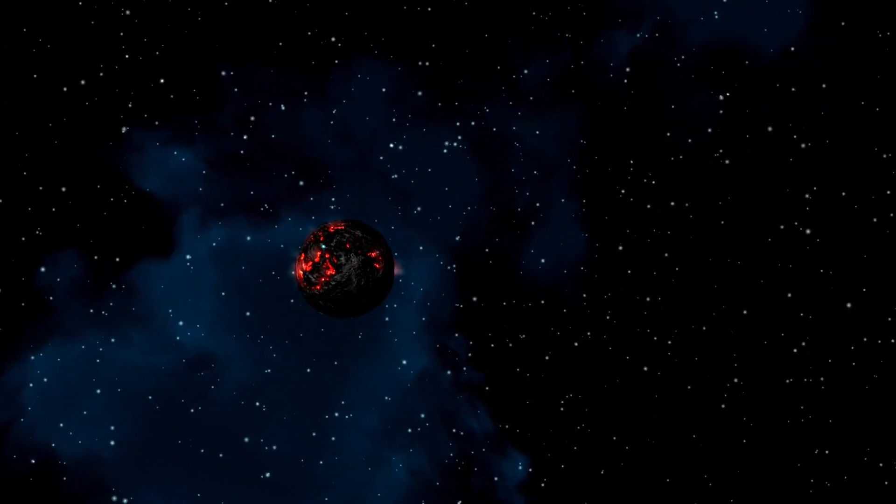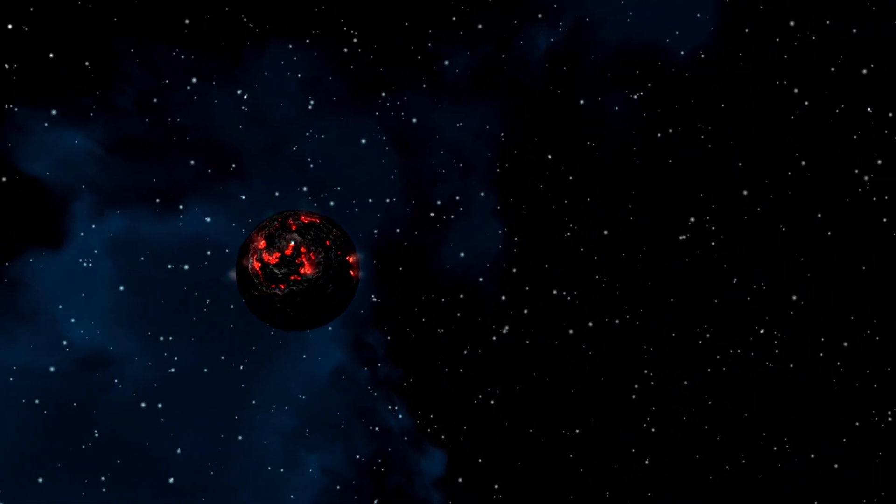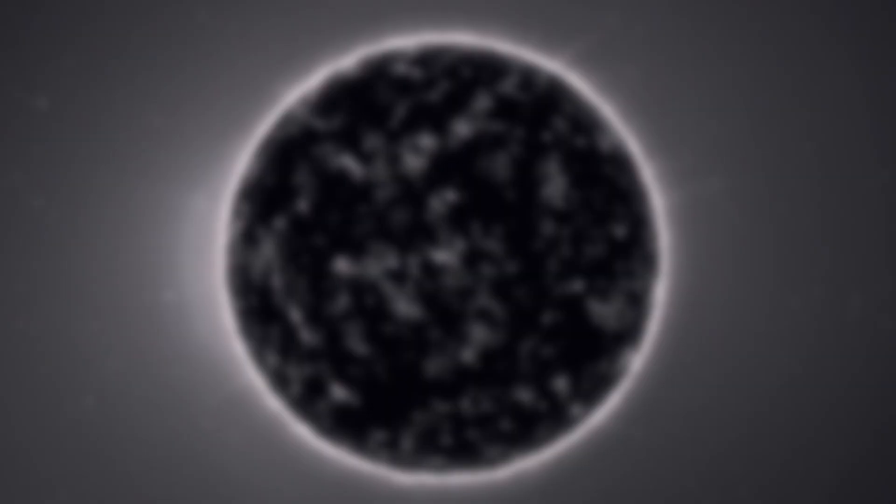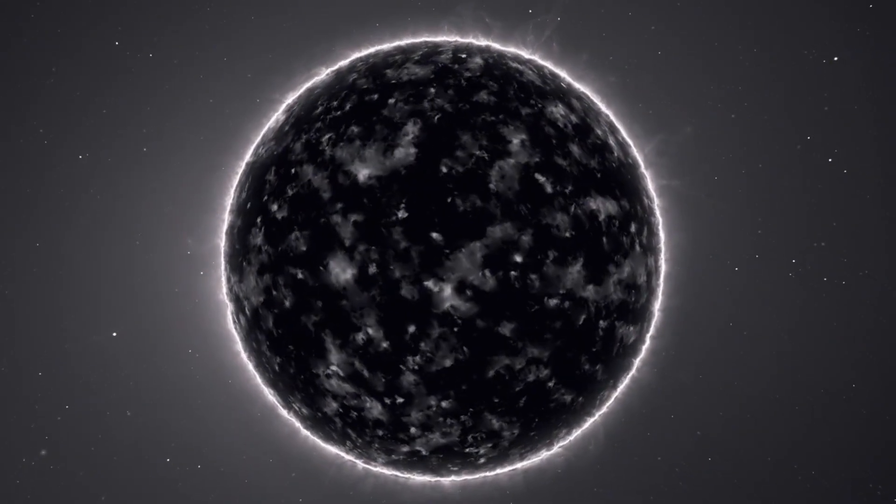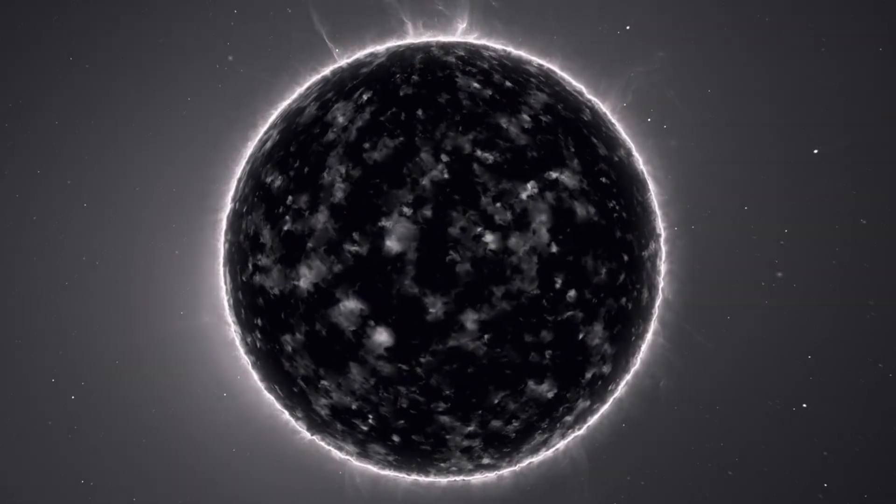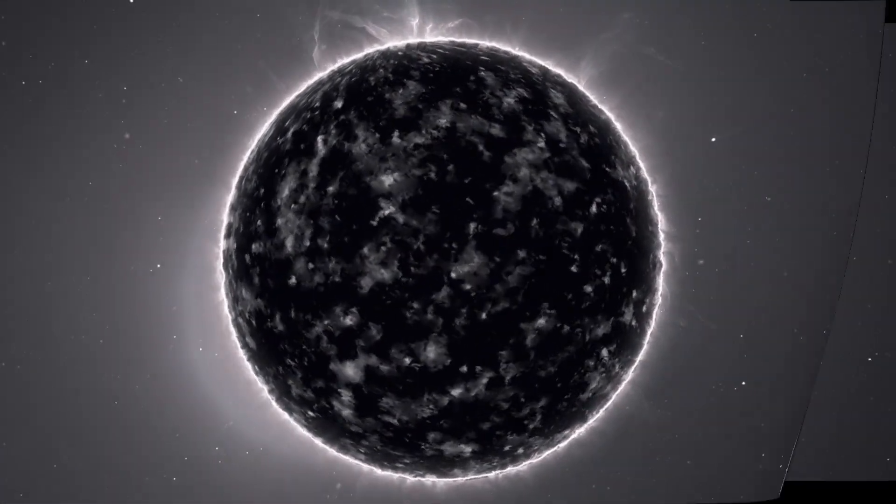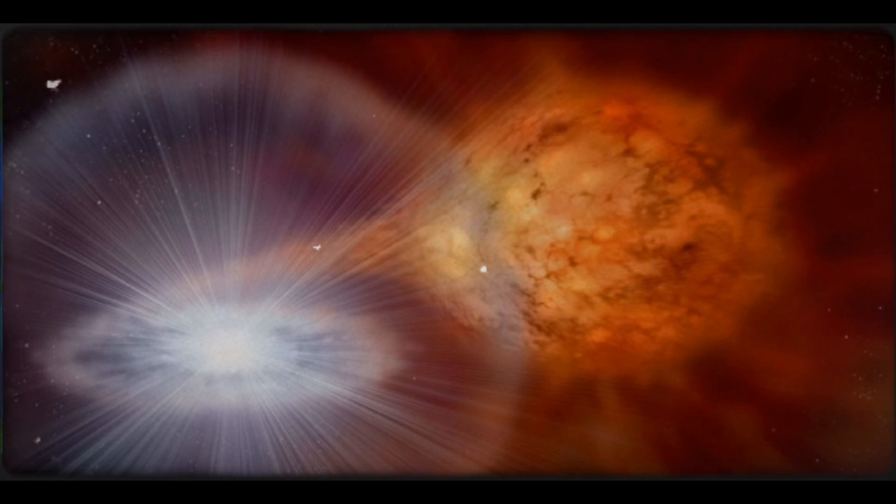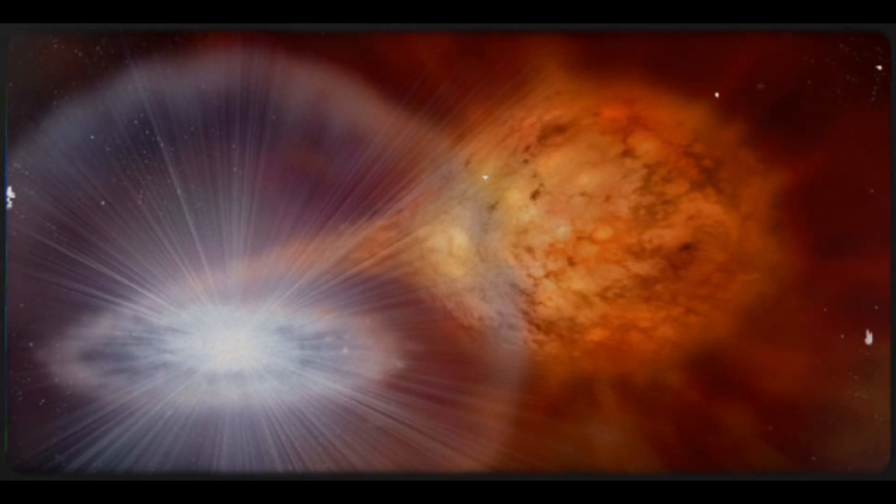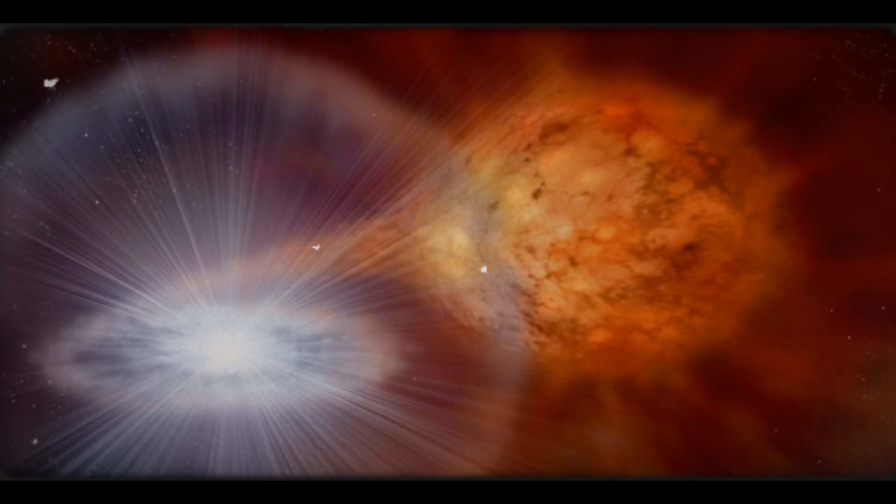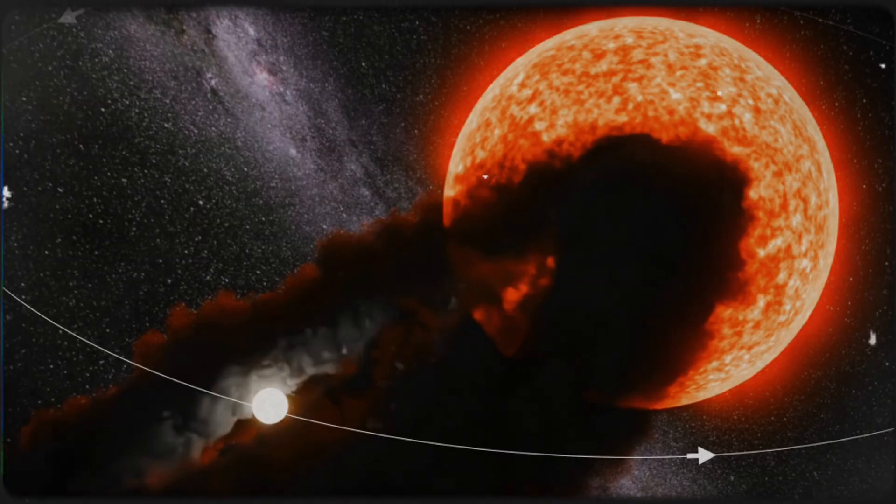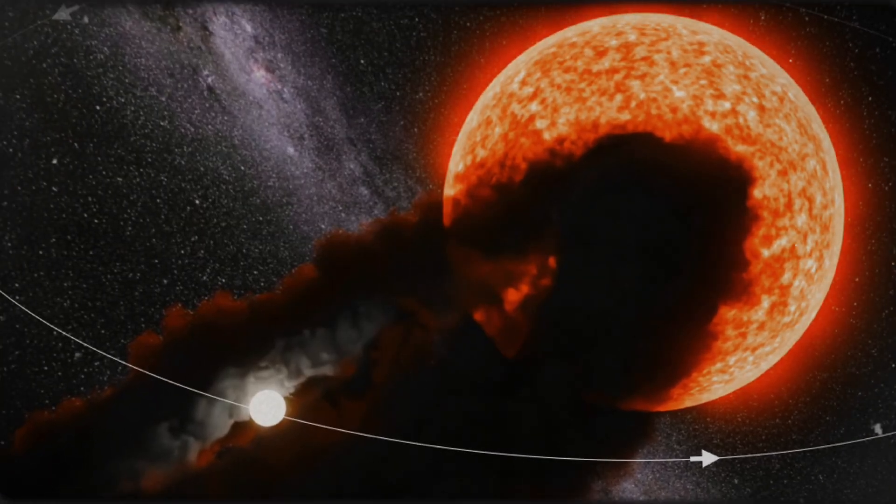This exchange of material between the white dwarf and the red giant is no ordinary transaction. It is a transformative act, akin to the striking of a match in the darkness. As the white dwarf eagerly siphons material from its companion, layers upon layers of stellar debris accumulate on its surface, generating immense pressure and temperature. Then, in a sudden and spectacular release of energy, the accumulated mass on the surface of the white dwarf ignites, giving birth to a nova—a celestial firework that illuminates the cosmic canvas with unparalleled brilliance.